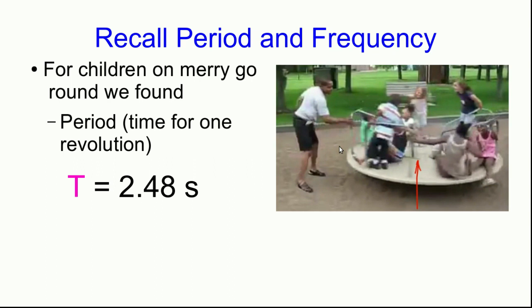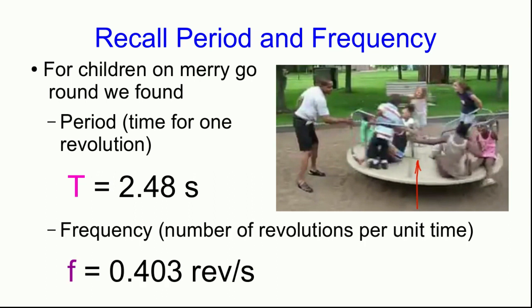Let's start by briefly thinking about units for period and frequency. In the first video lecture of this unit we found the period, which is the time for one revolution of some kids on a merry-go-round, and that's just a time, so we can use seconds or any other units of time. And we found a frequency, which is a number of revolutions per unit time, and we expressed it in revolutions per second.